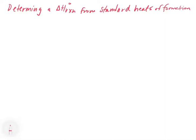In this video we're going to look at how we can determine the ΔH of reaction from standard heats of formation. In the last video we defined a standard heat of formation as the enthalpy required to take elements in their standard state, which have zero heat of formation, and bring them to a compound under standard conditions. This enthalpy change gives us the formation of a compound relative to a reference point of zero.